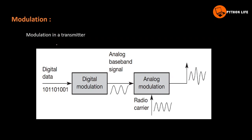Modulation will be explained in the transmitter. Digital Modulation uses an analog baseband signal. Analog Modulation uses a radio carrier wave, and this is digital data.